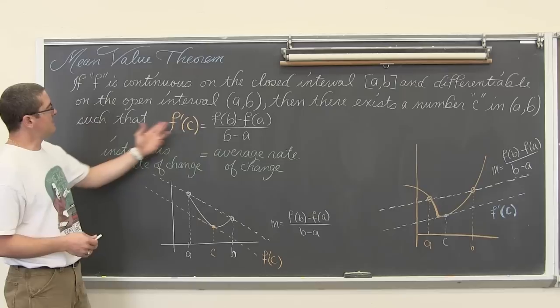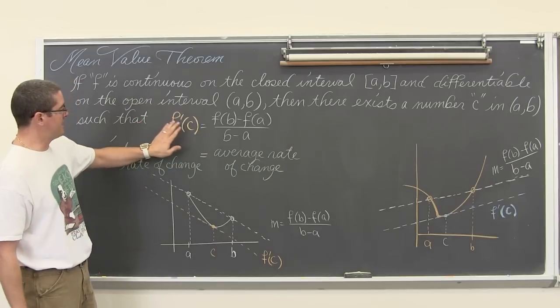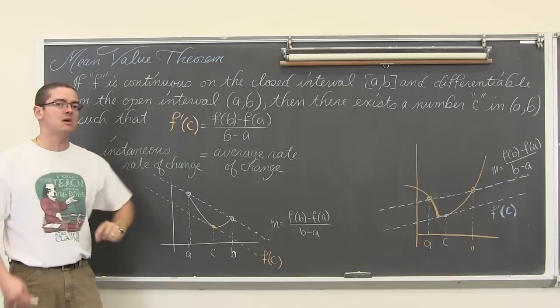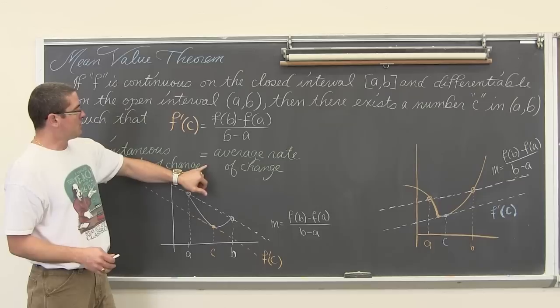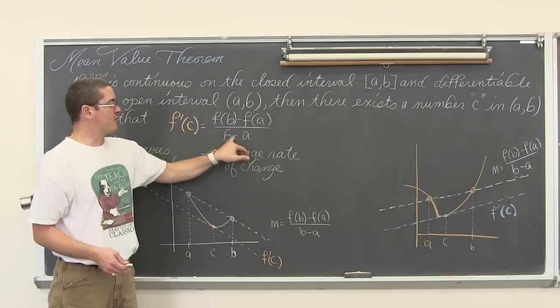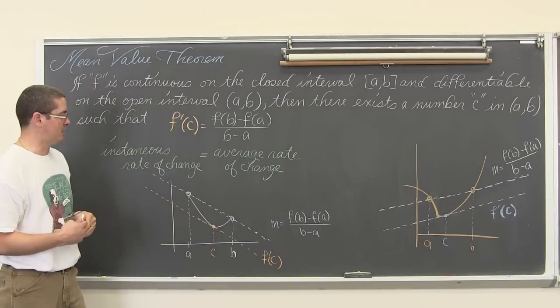There is this other point within that interval of c, such that f'(c), remember the derivative, slope, the instantaneous slope, f'(c) or the instantaneous rate of slope, the slope of the graph at that point is equal to the function f(b) - f(a) over b - a which we should be recognizing as just an average rate of change formula.